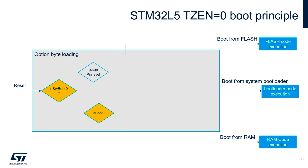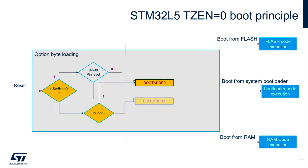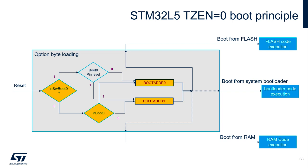Let's take a look at the boot principle when TZEN is 0. Similar to L4, there is the nSoftware_Boot0 configuration bit to determine whether to look at the configuration from the boot0 pin or the boot0 option. Both could be configured to use the boot address coming from boot address 0 and boot address 1 option bytes, which can be configured to point to the internal user flash address, system bootloader, or internal SRAM. When RDP is set to level 2, the boot is forced to the address from user flash.